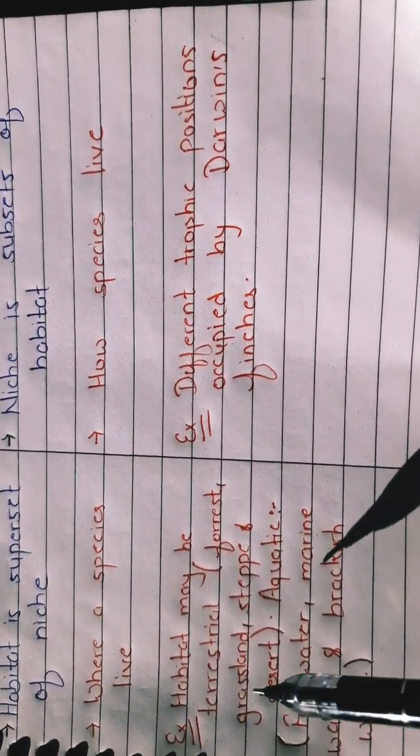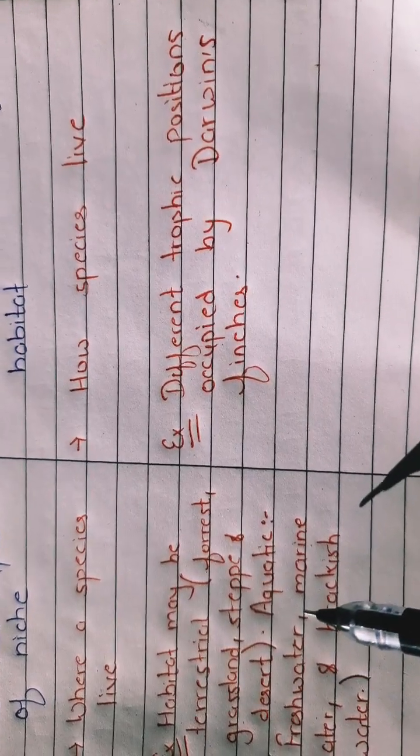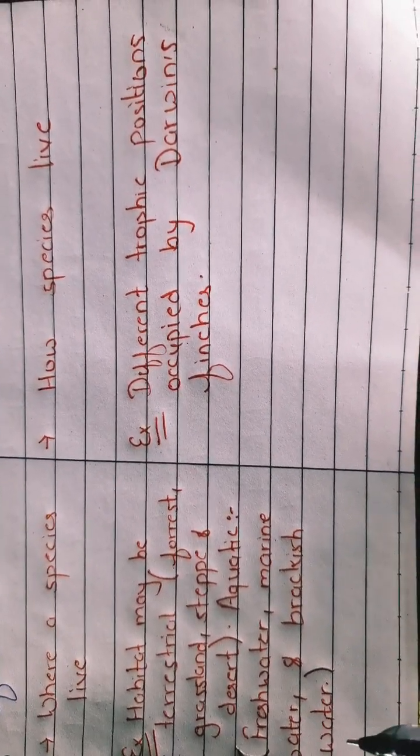E.g., habitat may be terrestrial, forest, grassland, steppe, desert, and aquatic also: fresh water, marine water, brackish water.